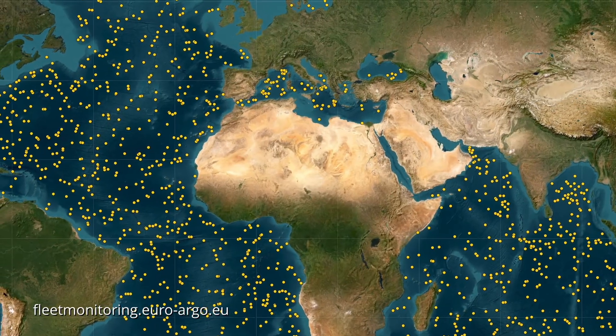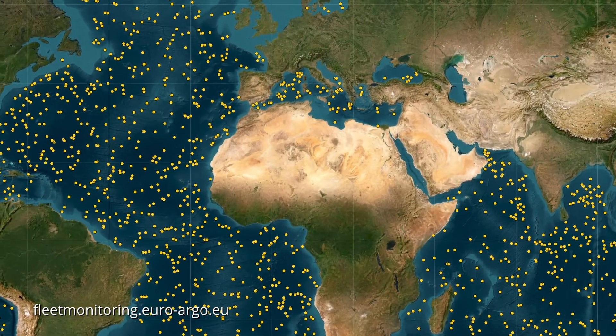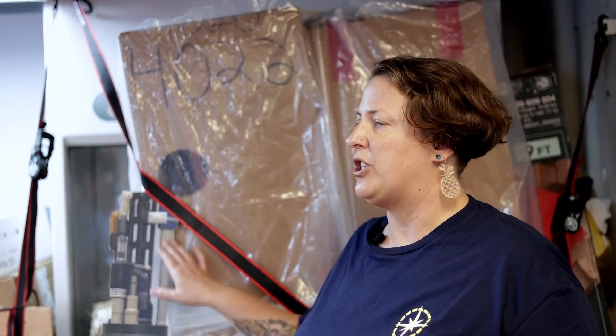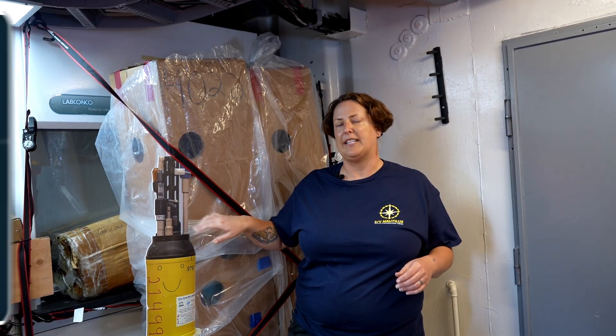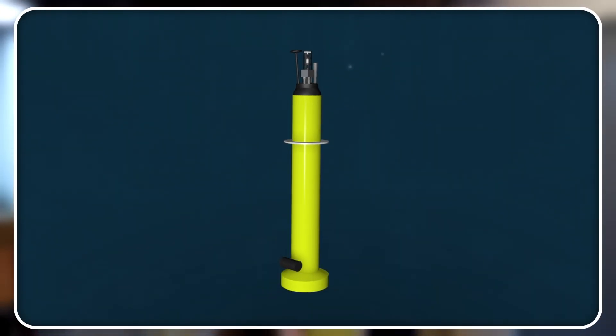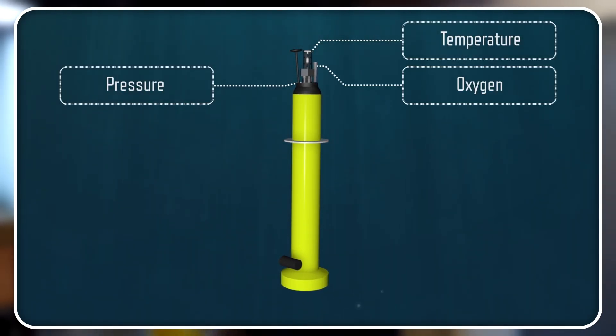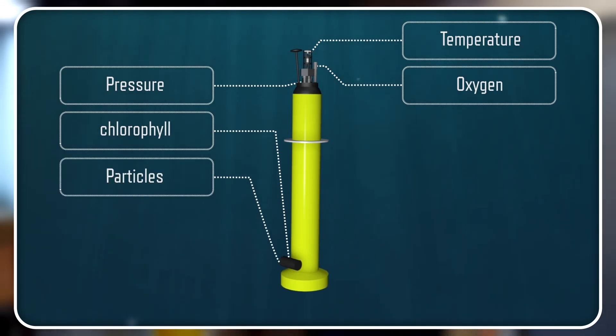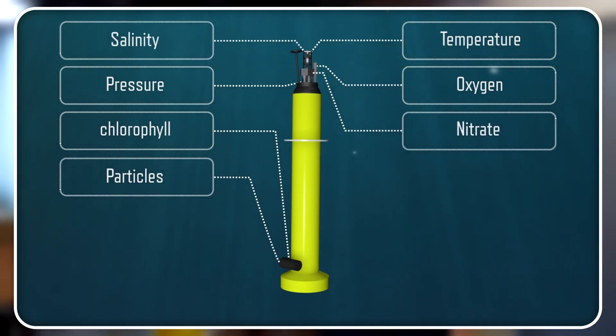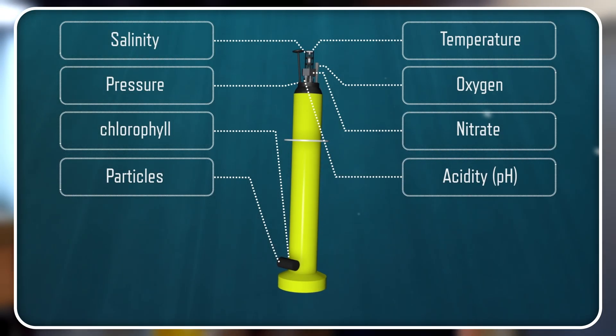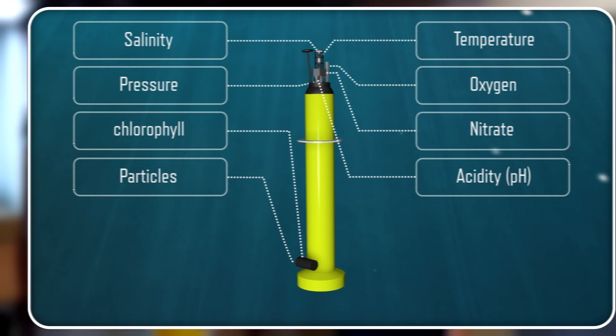Basically they are biogeochemical floats that we deploy all around the world and those have at least a CTD on them, which stands for conductivity, temperature, and depth. Our floats are unique because they have even more sensors. We've got a pH sensor and a dissolved oxygen sensor as well as a nitrate sensor. And then down here at the bottom there's also a chlorophyll and backscattering sensor that pulses different bandwidths of light to collect that data.